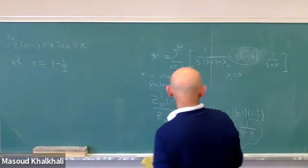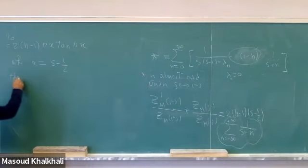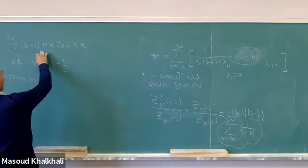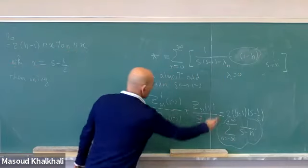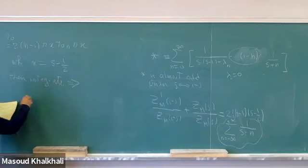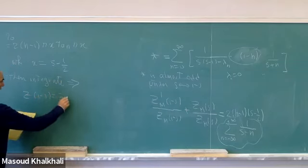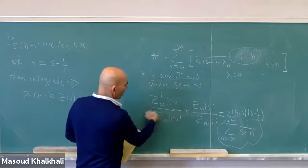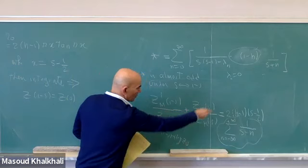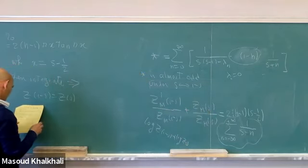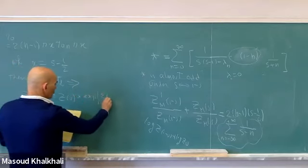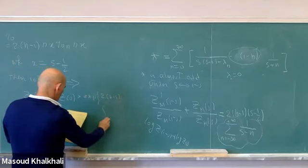Integrating: once you identify that sum as π x · tan(πx) with x = s − ½, you just integrate to get log Z_M(1−s) − log Z_M(s) = that integral, and exponentiating gives the multiplicative functional equation Z_M(1−s) = Z_M(s) · exp(2(H−1) ∫₀^{s−½} πx · tan(πx) dx). That is an elementary derivation.